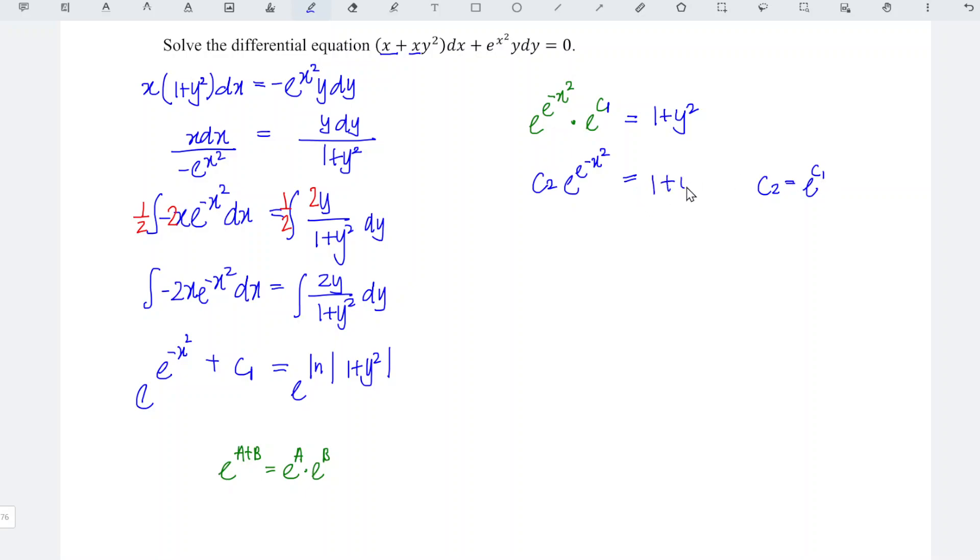1 plus y square. And we just have to express y in terms of x. So y² is equal to c2 e^(-x²) minus 1.